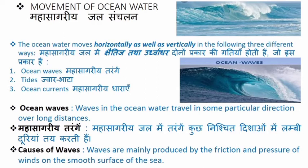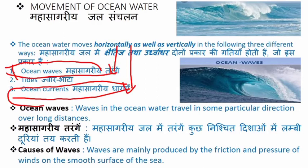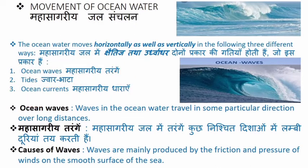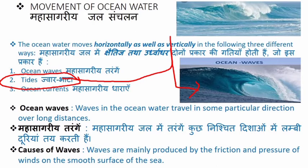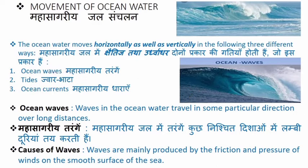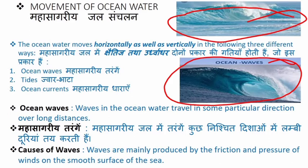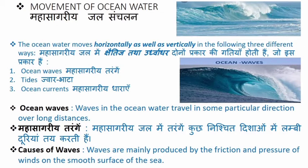Horizontal motion of ocean water refers to ocean waves and ocean currents — both of these move horizontally, meaning they travel sideways. Vertical motion of ocean water refers to tides (ज्वार भाटा). As shown in a picture, tides involve waves rising very high upward from the ocean floor — that is vertical movement. When water moves straight forward horizontally, that is horizontal movement.